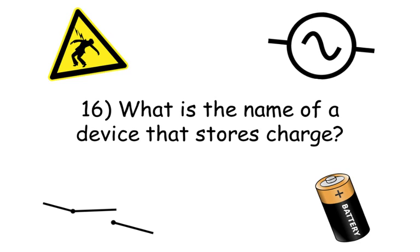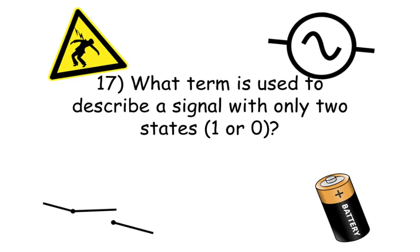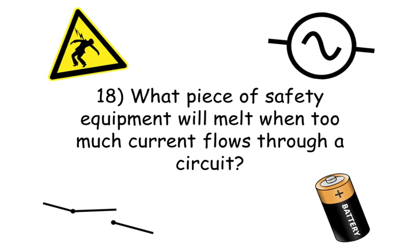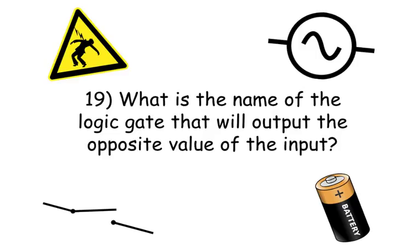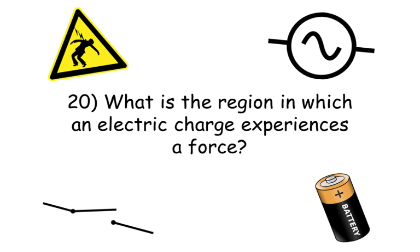Number seventeen: what is the term used to describe a signal with only two states — one or zero? Number eighteen: what piece of safety equipment will melt when too much current flows through a circuit? Question nineteen: what is the name of a logic gate that will output the opposite value of the input? Number twenty: what is the region in which an electric charge experiences a force?